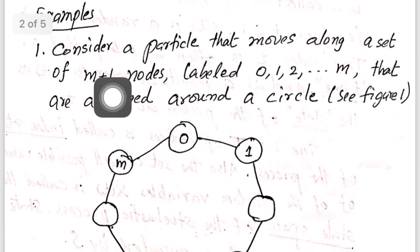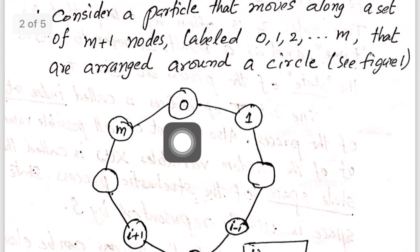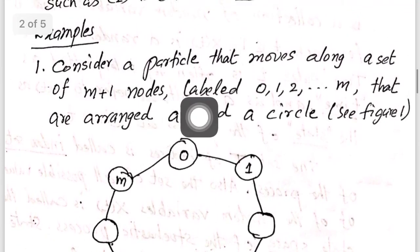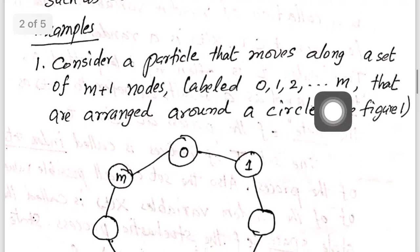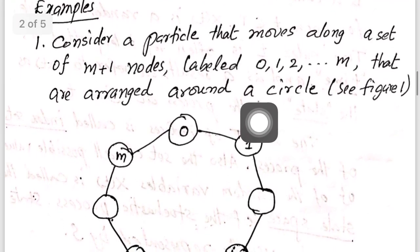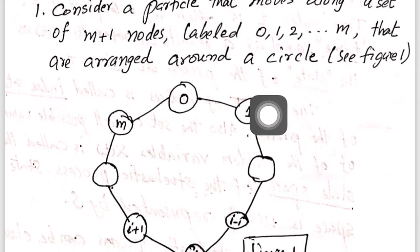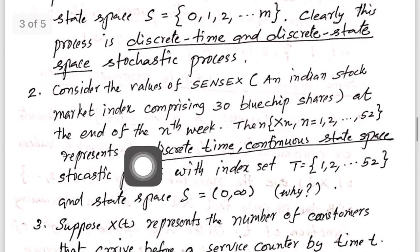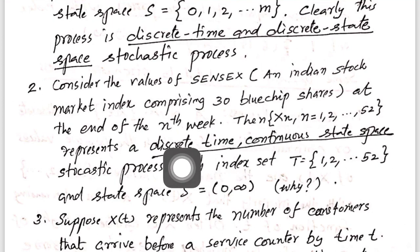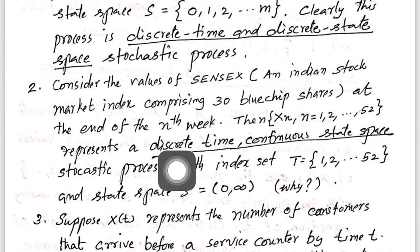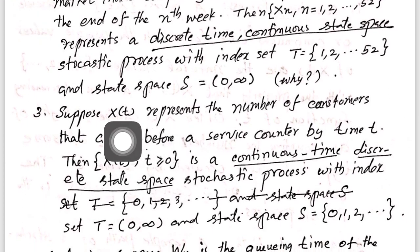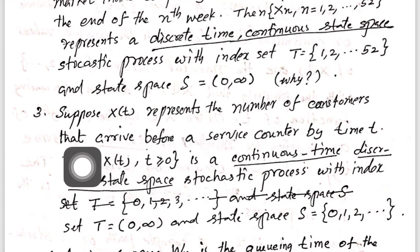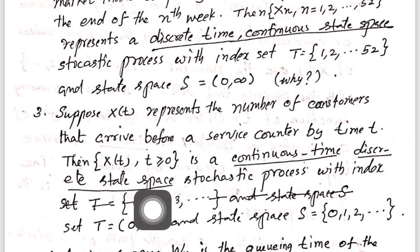We considered several examples. The first example concerns the movement of a particle along labels 0, 1, 2, ..., M around a circle, either one step clockwise or one step anti-clockwise — the corresponding family is a Markov chain. In the second example, we considered the value of the Sensex, which moves from day to day but takes continuous values, so it is a continuous space discrete time stochastic process. We also considered X(t) representing the number of customers that arrive at a service counter by time t, which is a continuous time discrete space stochastic process.